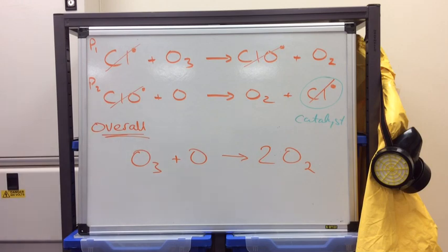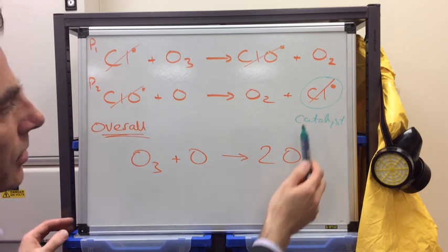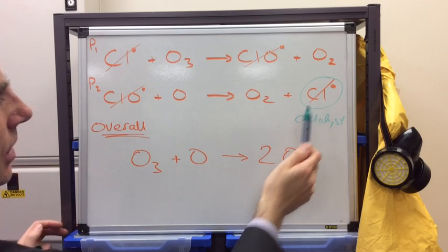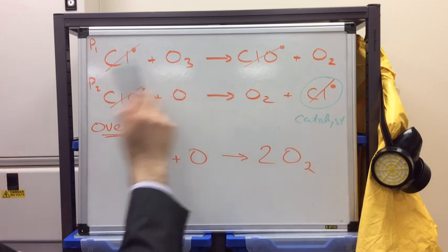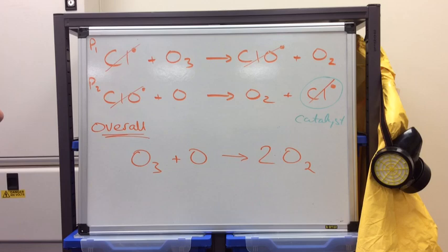You sometimes see these two reactions referred to as the catalytic breakdown of ozone. And it's catalysed by this chlorine radical. And scientists think that one chlorine radical can destroy 100,000 ozone molecules.